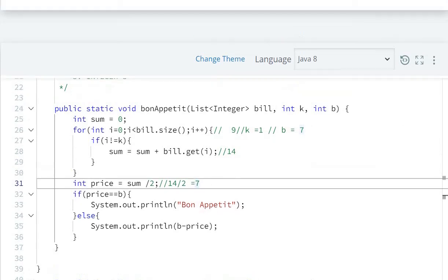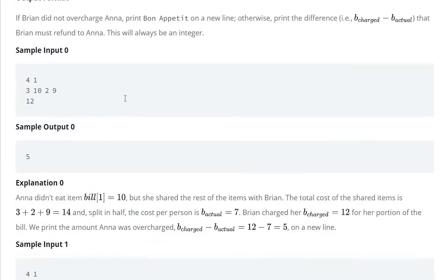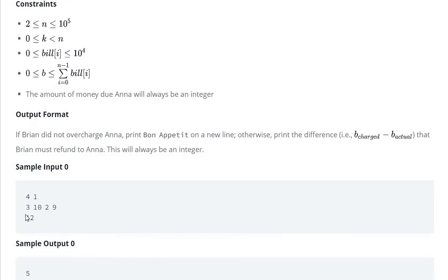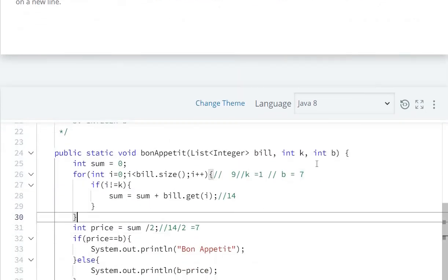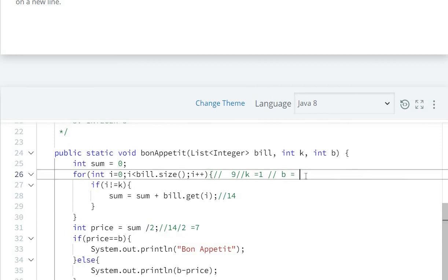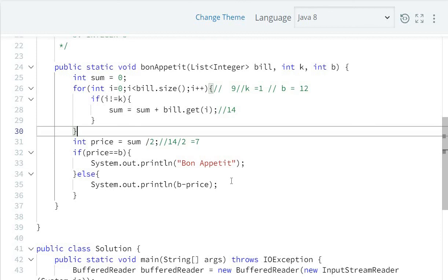So we have to print Bon Appetit. In the above case, if we see, the b value is 12. Same problem: the b value is 12 and price is not equal, that is 7 is not equal to 12.